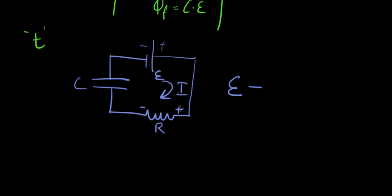Why minus? Because for the resistor it's going from higher to lower. The current is going from high to low, so i times r. And here again plus and minus, so minus q over c. If q equals cv, v equals q over c. And this is equal to zero.